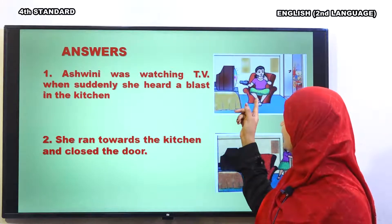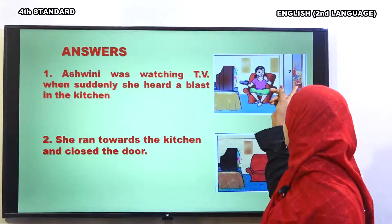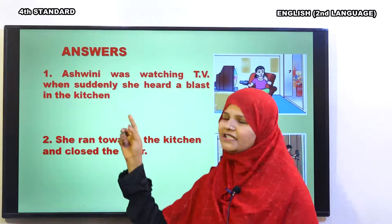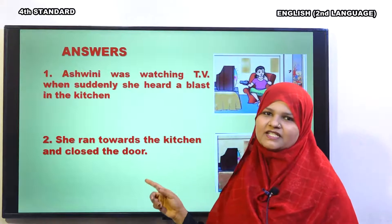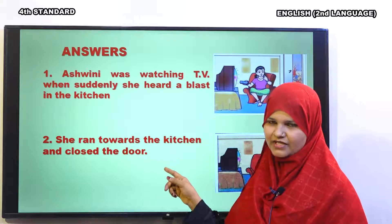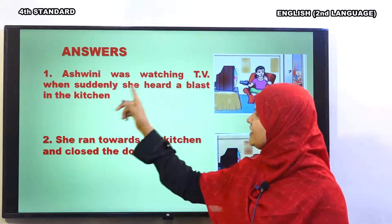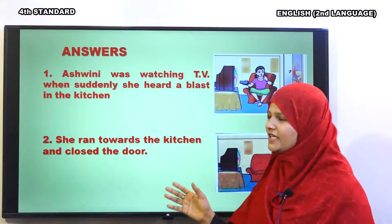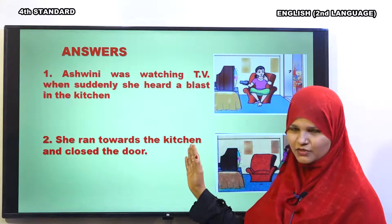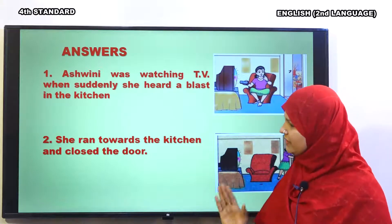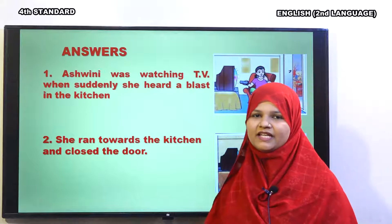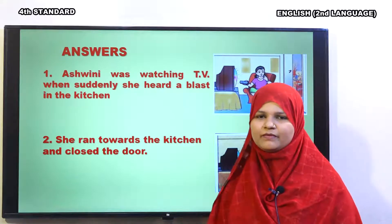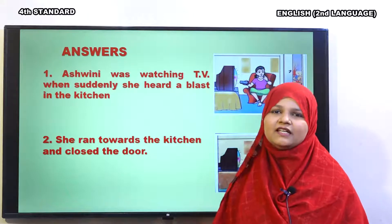First one: here you can see Ashwini is watching television and there is a blast in the kitchen. Ashwini was watching TV when suddenly she heard a blast in the kitchen. Dear children, note down these sentences because later you have to write a paragraph using these sentences. She ran towards the kitchen and closed the door. Blast sunne ke baad Ashwini kitchen ki taraf bhaagi aur darwaza band kar diya. Ashwini ki akal mandi yeh thi ke aag dekhne ke baad wo nahi ghabrayi aur nahi chillayi.